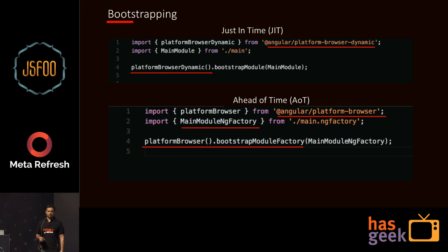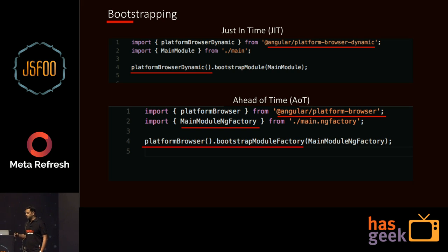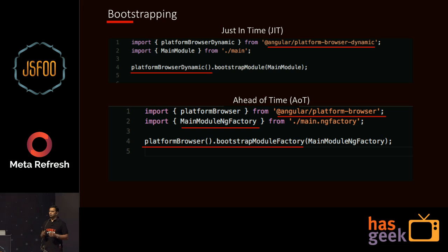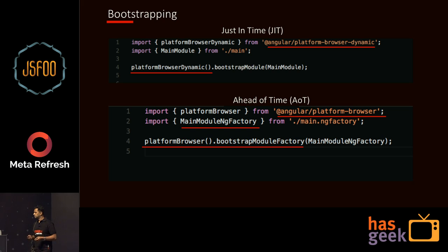The way you bootstrap is also a little different. With just-in-time compilation, you bootstrap using Platform Browser Dynamic, because that has the bundler included. But with ahead-of-time compilation, you use a different bundle — Platform Browser — and the entire compiler module is moved out. The compiler code to compile in real-time was close to about 50% of the entire bundle size, so that's the reason you get the majority of the benefits.